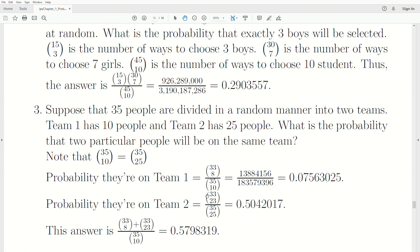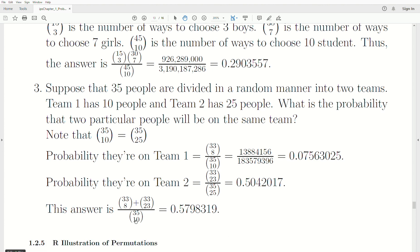And probability they're on team 2 is 33 choose 23, right? There's 35 people total, we want 25, but two of them we're placing on the team. So it reduces to 33 people to pick from, and we only need 23 more. So it's 33 choose 23. And then it's over the total number of ways to put 25 people on a team, so it's 35 choose 25.